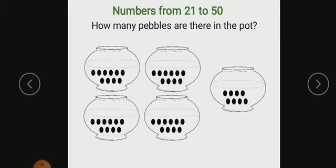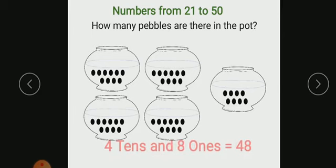Again you have 4 pots. These 4 pots contain 10 pebbles each. That means it becomes 4 tens. And here are 8 ones. It becomes 48.